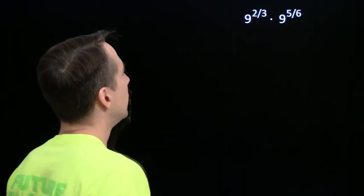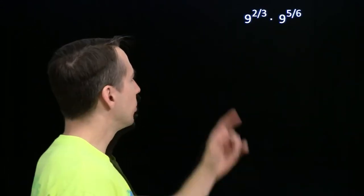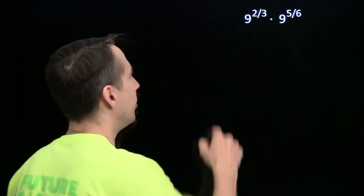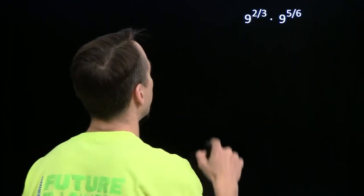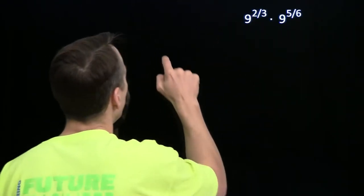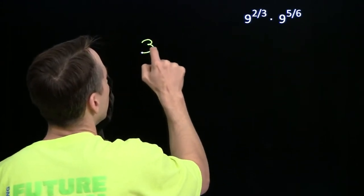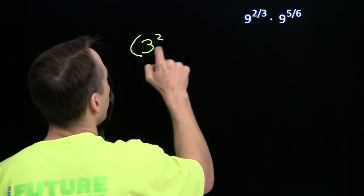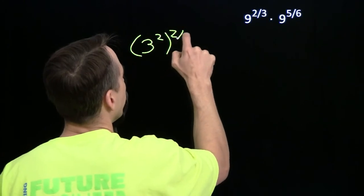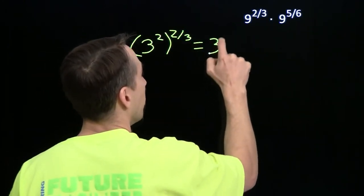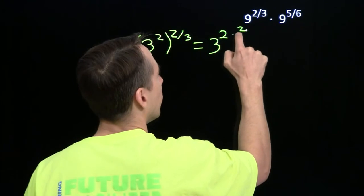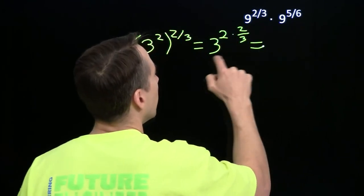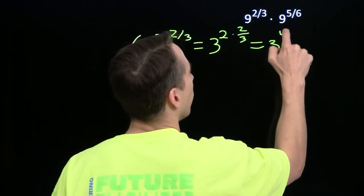Now we have two fractional exponents to deal with. All right, I'm doing them one at a time. 9 to the 2 thirds. Well, 9 is 3 squared. We can use our power of a power again. And that gives me multiply the exponents, 3 to the 2 times 2 thirds is 3 to the 4.